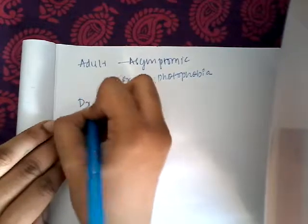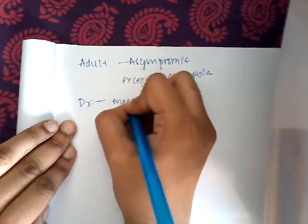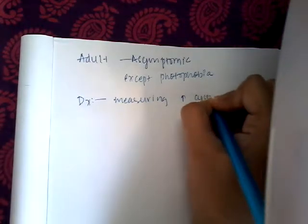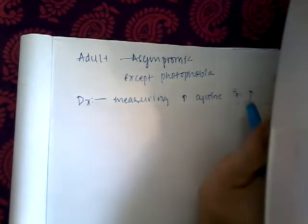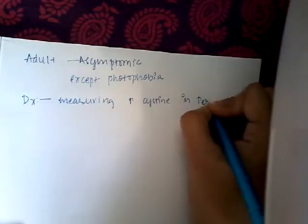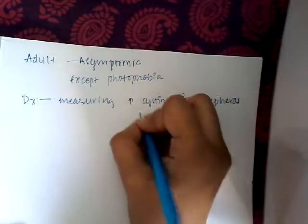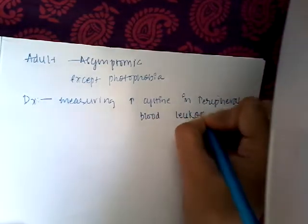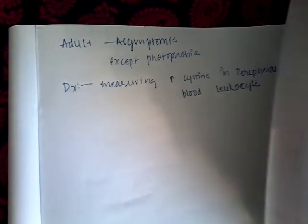The diagnosis is made by measuring increased cysteine not in the blood but in the peripheral blood leukocytes, because lysosomes are present within these cells.